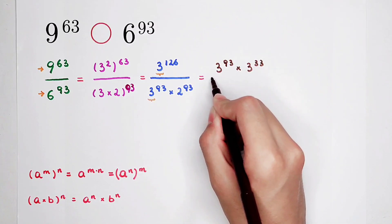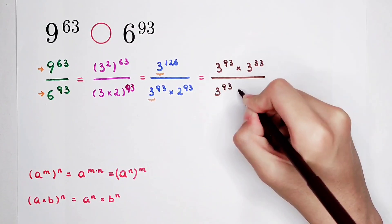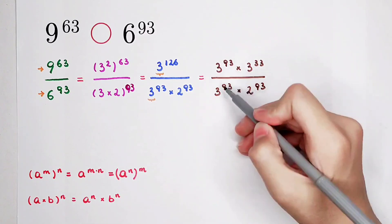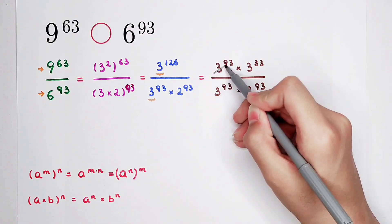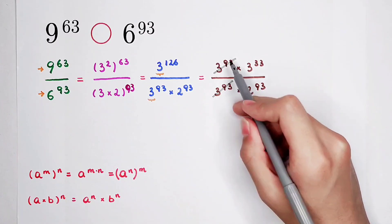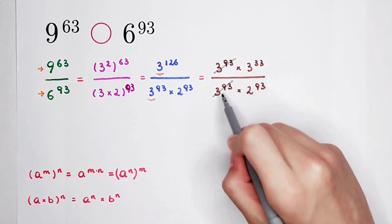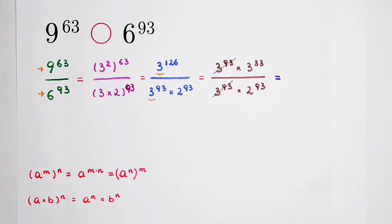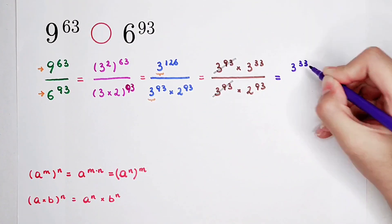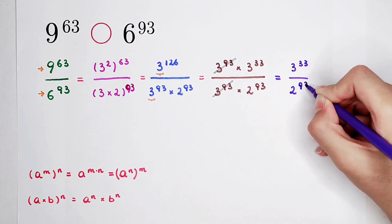The denominator is 3 to the power of 93 times 2 to the power of 93. Since 3 to the power of 93 appears in both numerator and denominator, they cancel out. We now only need to compare 3 to the power of 33 divided by 2 to the power of 93 with 1.